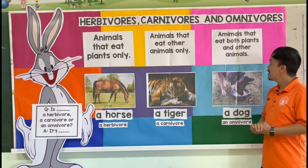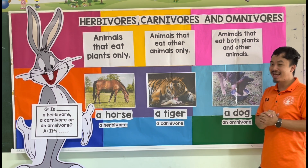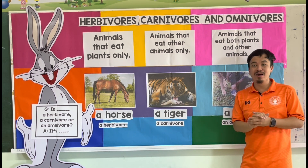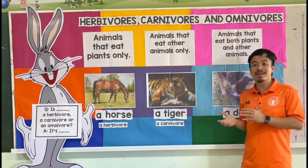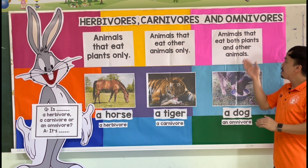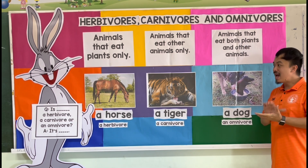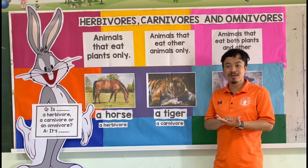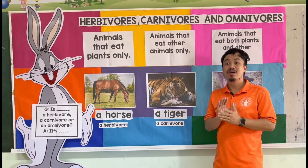What are omnivores? Omnivores are animals that eat plants and other animals. So omnivores can eat almost everything — they can eat plants and they can also eat animals. The key words are plants and other animals. Now, for us to understand more what herbivores, carnivores, and omnivores are, I will give you some examples.